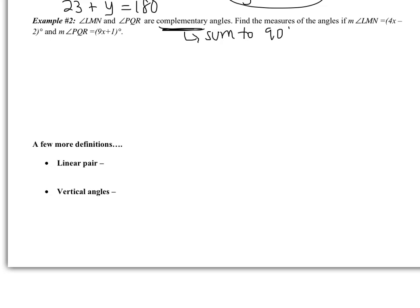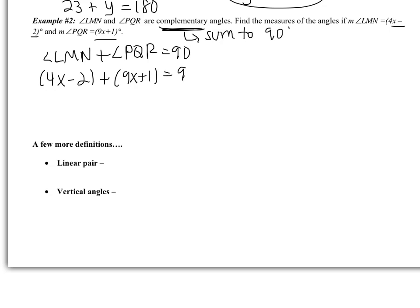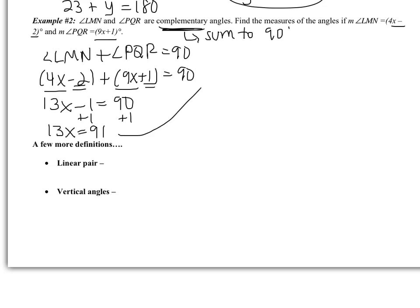I have two angles that are complementary, which means they sum to 90. So angle LMN plus angle PQR should equal 90. LMN is 4X minus 2, and PQR is 9X plus 1. Adding them and setting equal to 90: combining like terms, 4X and 9X gives 13X, and negative 2 plus positive 1 gives negative 1. So 13X minus 1 equals 90. Adding 1 to both sides gives 13X equals 91. Dividing by 13, I get X equals 7.